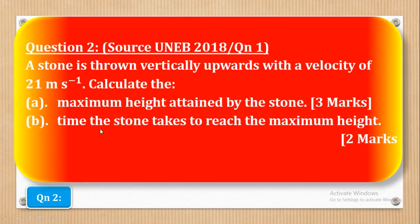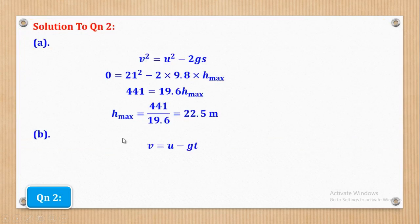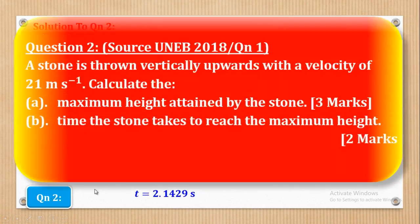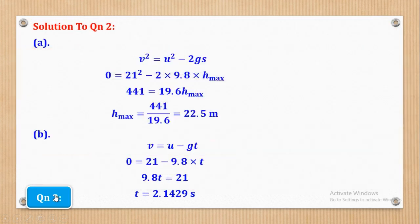For part B, they want the time the stone takes to reach maximum height. We use the first equation of motion: V = U − GT for upward motion. V is 0, U is 21, G is 9.8. With one unknown T, making T the subject gives T equal to 2.1429 seconds.